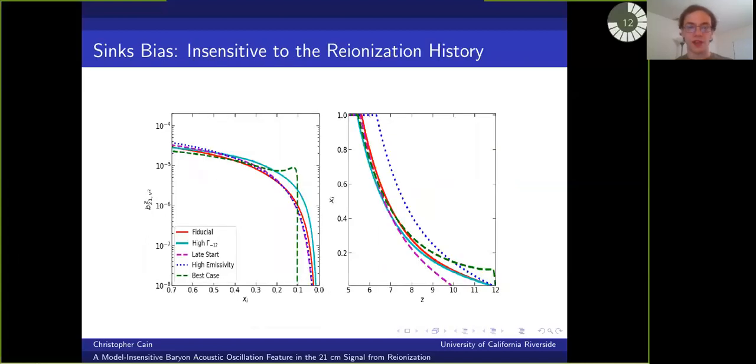So using an analytical model for the coupling between the clumping factor and the 21 centimeter intensity, combined with our simulation results, we computed this sink bias for several reionization histories. And the panel on the left here shows the square of the sink bias as a function of ionized fraction. And the panel on the right shows the ionized fraction as a function of redshift for each history. And you can see that even though the histories are quite different, the square of the bias factor varies by a factor of a few at most and usually less than this.